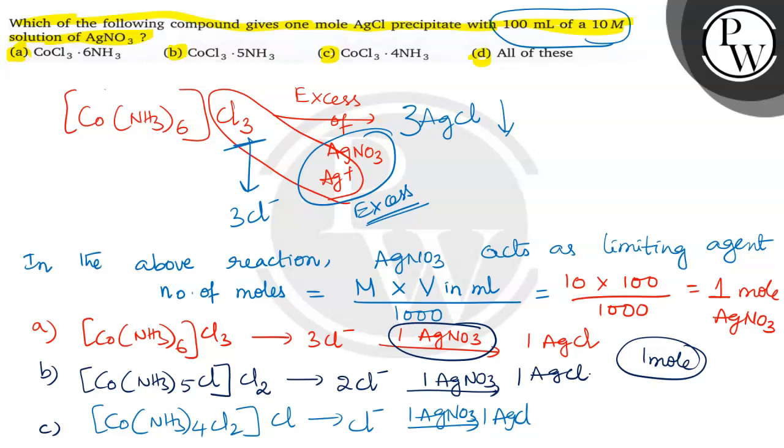Means all are giving one mole of AgCl, same mole. One mole of AgCl is given by all of these because AgNO3 is limited. If the same question had excess AgNO3 given, then which one gives one mole means option C.